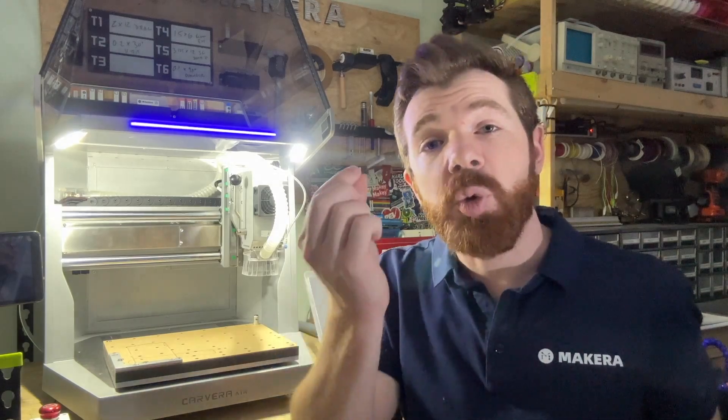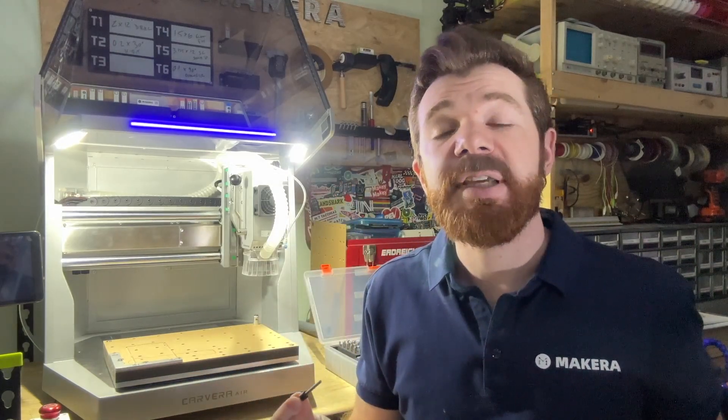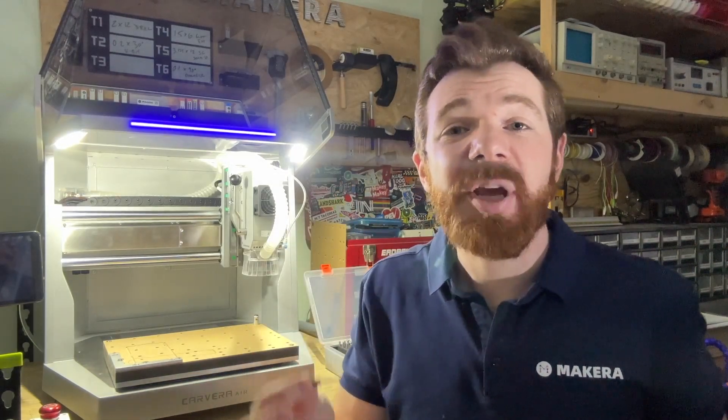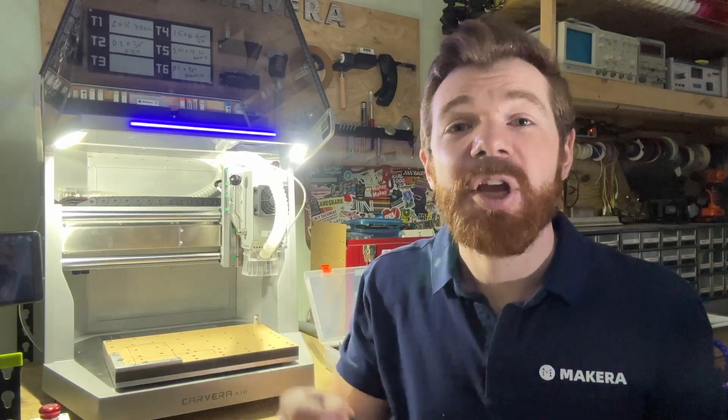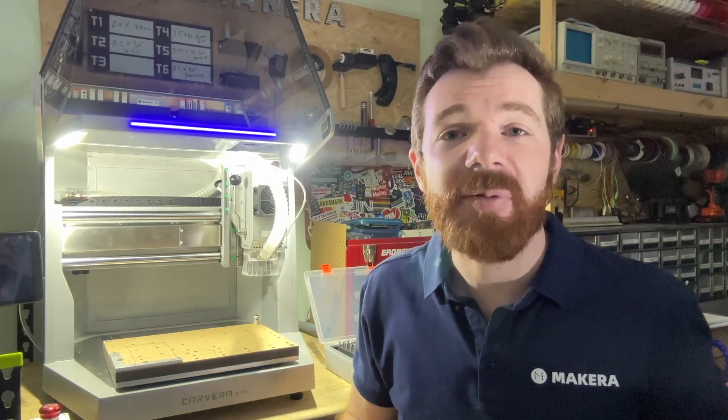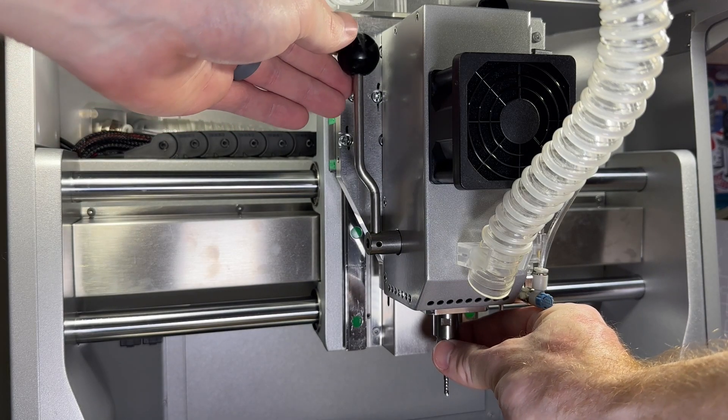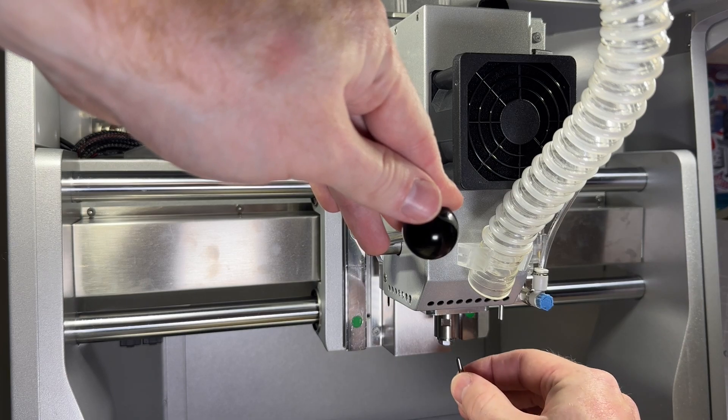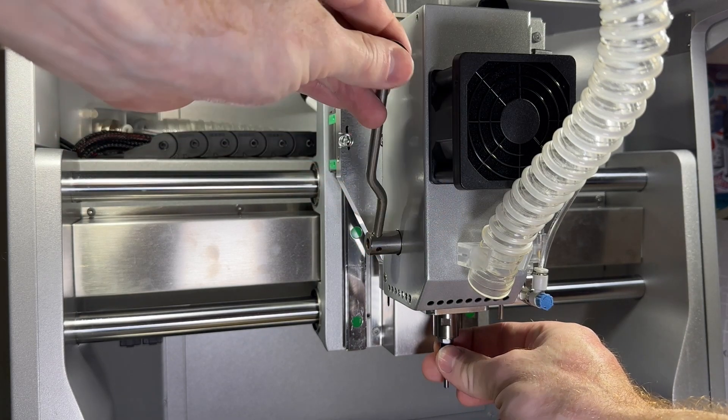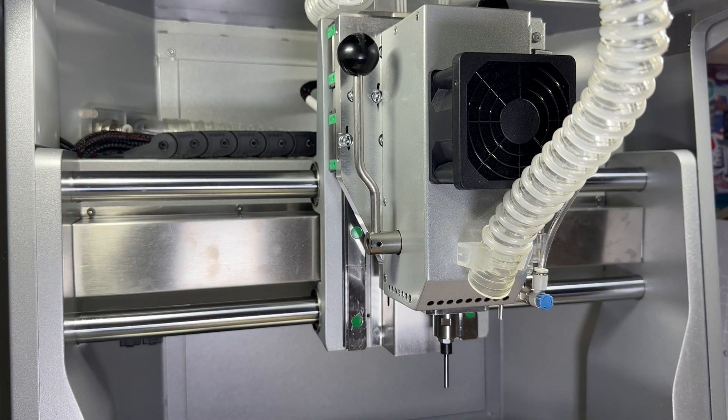We now need to choose a tool to use for the manual probing sequence, and the Carvera Air is shipped with a test probe, a cylindrical tool with no cutting features which is ideal for this scenario. You can use any tool that you'd like for this, but the test rod's parameters are already pre-loaded in the Carvera controller by default. If you choose to use a different tool, ensure that you know its height and diameter.